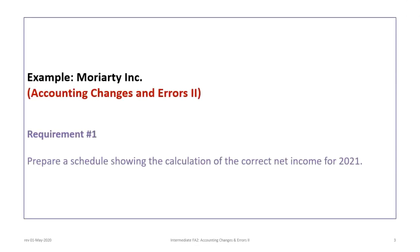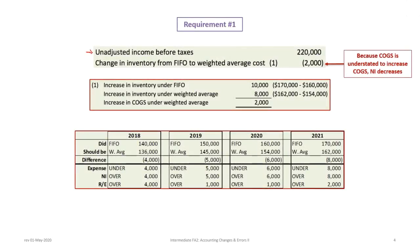Requirement one is preparing a schedule to show the calculation of correct net income for 2021. We begin with unadjusted income before taxes of $220,000. The first item is the change in inventory from FIFO to weighted average cost. Inventory errors self-correct after two years, so we only need to be concerned about 2020 and 2021. Between those two years, the increase in inventory under FIFO was $10,000 (170 from 2020 less 160 from 2021), and the increase under weighted average was $8,000 (154 in 2020 to 162 in 2021).